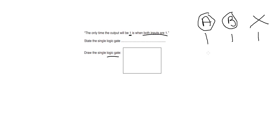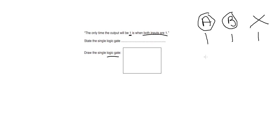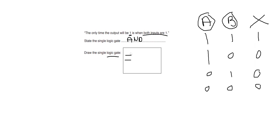If we tried an OR gate, the output can be one even when only one input is one — that gives us two cases where the output is one. But the question says the only time the output is one, so it can't be an OR gate. Let's try an AND gate: 1 AND 0 is 0, 0 AND 1 is 0, 0 AND 0 is 0 — so it must be an AND gate.